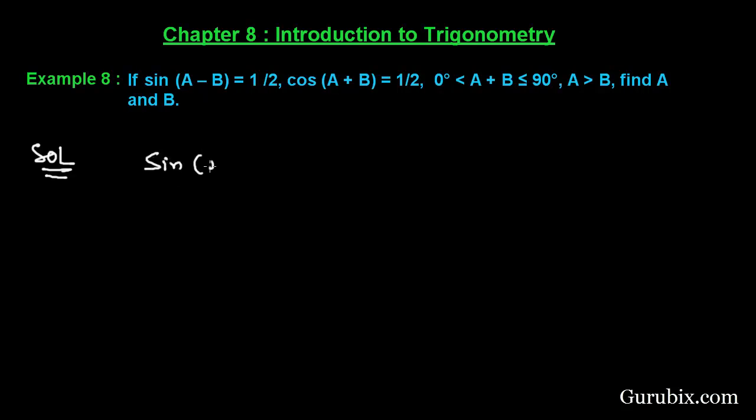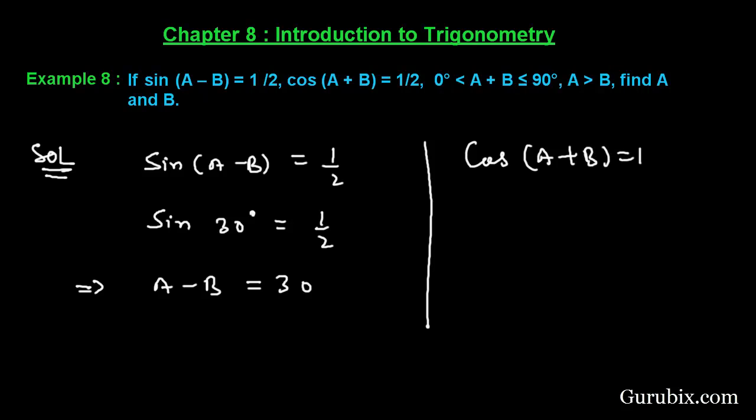We are given that sin(A - B) equals 1/2, and we know that sin 30° is 1/2. This implies that A - B equals 30°. Same as cos(A + B) equals 1/2, and we know that cos 60° is 1/2. This implies that A + B equals 60°.